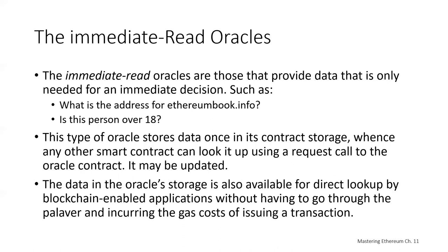Immediate read oracles provide data only needed for an immediate decision, like 'what is the address for ethereumbook.info?' or 'is this person over 18?' Those wishing to query this kind of data do so on a just-in-time basis. Examples include oracles that hold data issued by organizations such as academic certificates, dial codes, institutional memberships, airport identifiers, or self-sovereign IDs. This type of oracle stores data once in its contract storage where any other smart contract can look it up by using a request call.